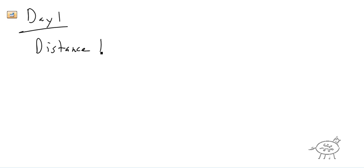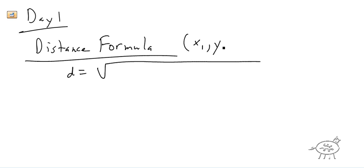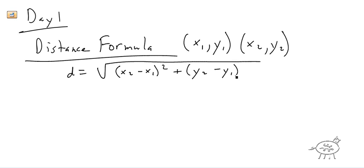We're going to start with the distance formula. You guys probably learned the distance formula in algebra one, used it in geometry, and learned it again in algebra two, but we're going to review it because it's a pretty important formula we're going to use often. So the distance between two points (x1, y1) and (x2, y2) is: d equals the square root of (x2 minus x1) squared plus (y2 minus y1) squared.